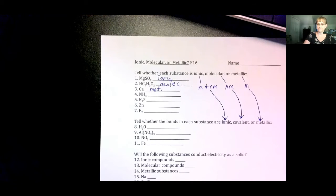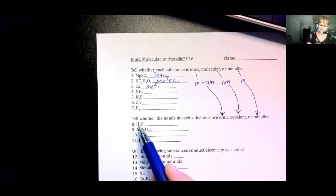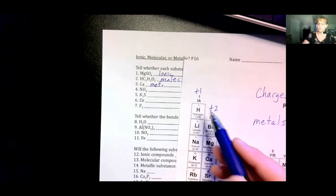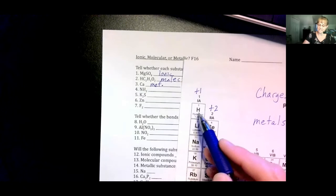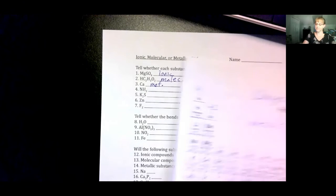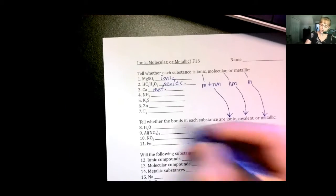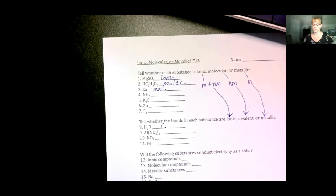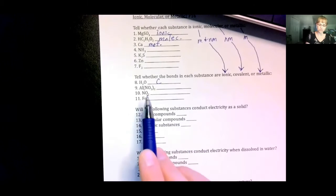So, for example, H2O, there are two hydrogens. Well, there's hydrogen, so it is a non-metal, and oxygen is a non-metal. Therefore, you have covalent bonds in water. Pause the video and try number nine through eleven.